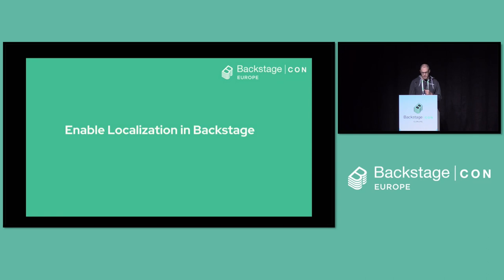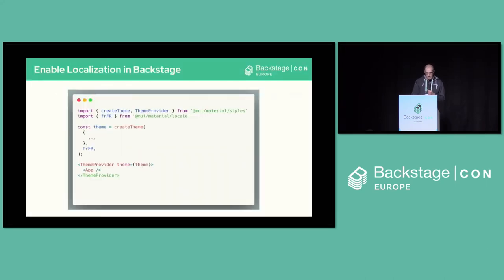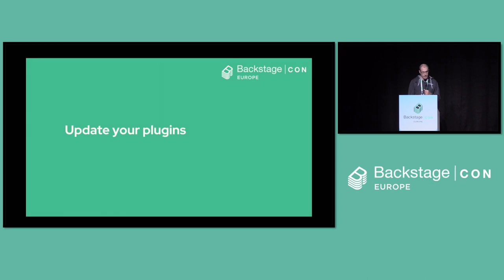So how to do that? That's actually very easy. In Backstage, it's using Material UI, so you could enable this with a theme provider, which you probably already do — for example, to change the colors, the palette, etc. From there, you could also add any locales. In that example, I'm adding the French locale. I have an import, and I just add it to the theme. And then that's it.